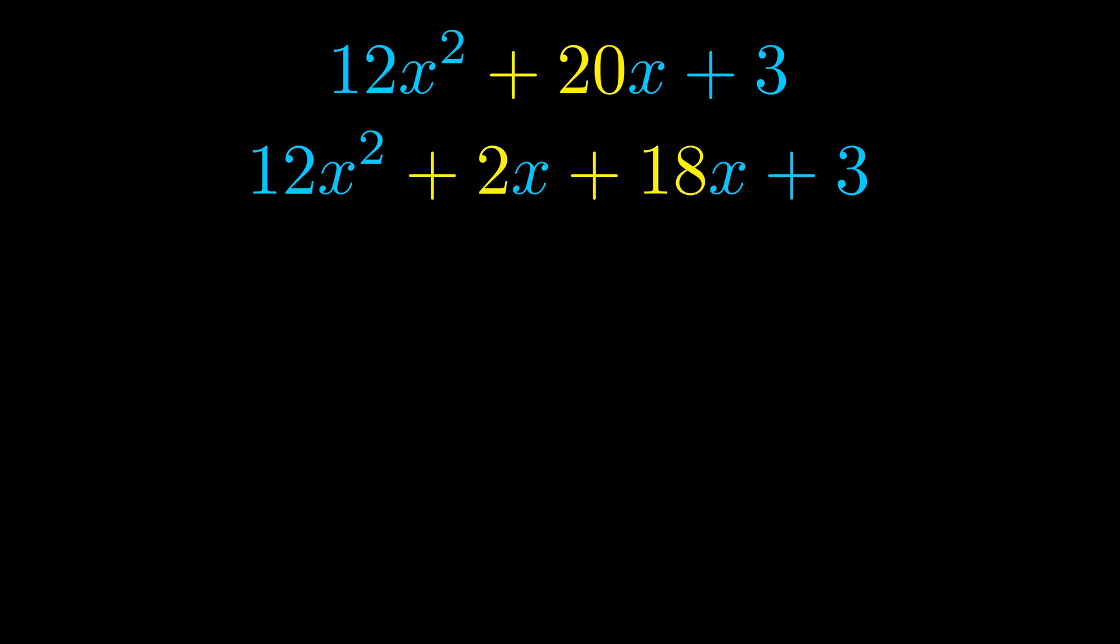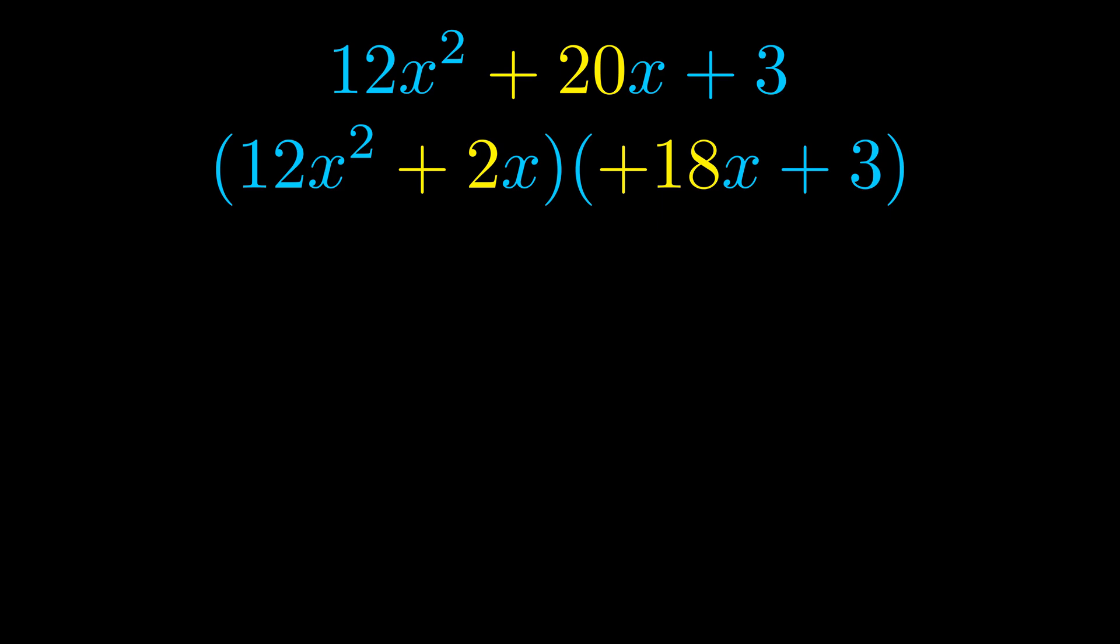Once we've done this we go ahead and put parentheses around the first term and the last term. And we do that so that we can take the greatest common factor out of both terms. We can see the greatest common factor is now outside in green.